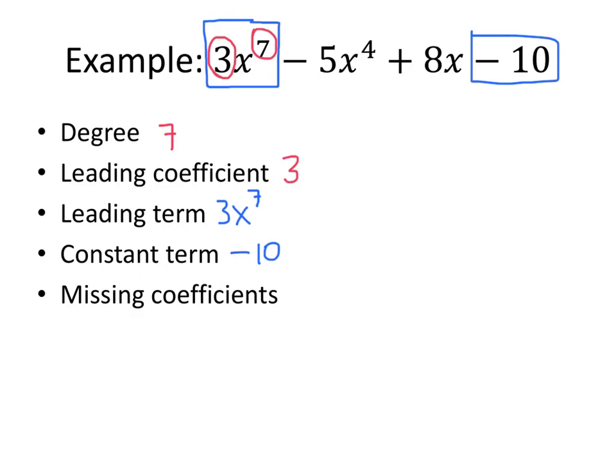And sometimes we have missing coefficients. So you might notice here that we have a degree 7 polynomial, which means we could have something times x to the 6th, something times x to the 5th, and so on for all those lower powers. But some of those lower powers don't actually appear.